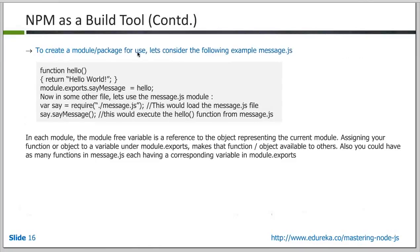To create a module or package for use, consider this example: a function hello returns 'hello world', and module.exports says hello. When you require the file, you can call say.sayHello, which will execute the hello function in message.js. In each module, the module free variable is a reference to the object representing the current module. Assigning your function or object to a variable under module.exports makes it available to others. You could have as many functions in message.js, each with a corresponding variable in module.exports. Today, when building the calculator function, we're going to attach four methods to module.exports.